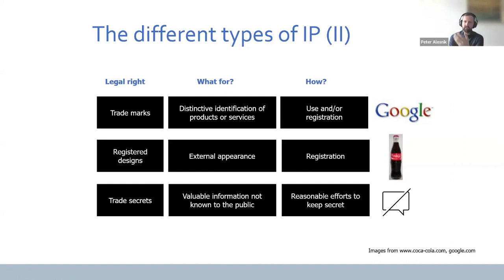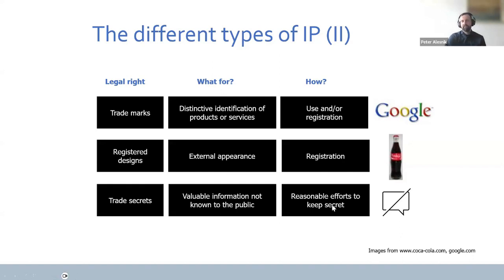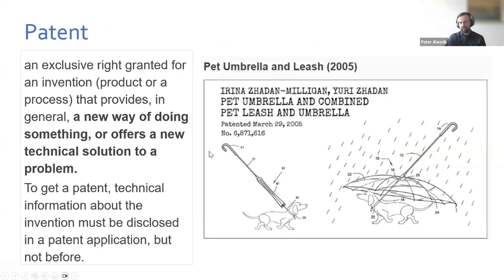There are also other forms of IP not shown here. The last on the list is trade secret — valuable information not known to the public — which you secure with reasonable efforts to actually keep it secret.